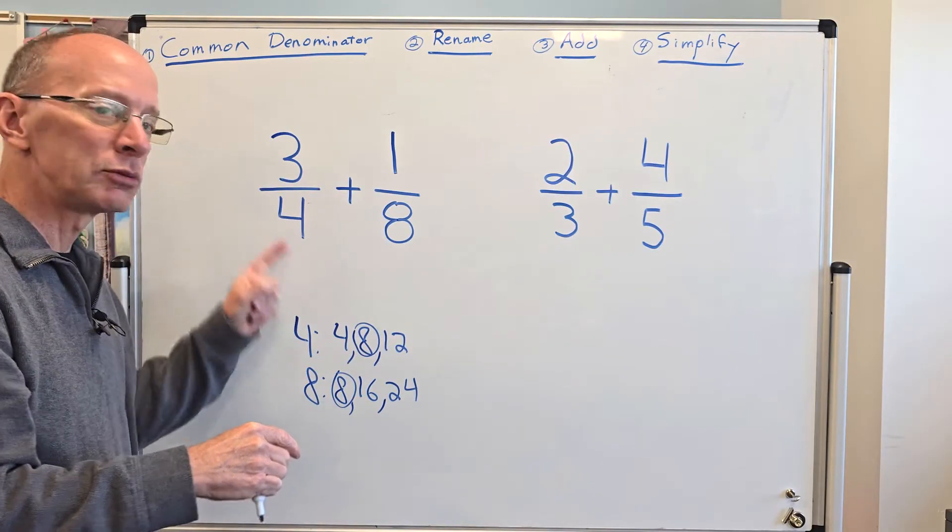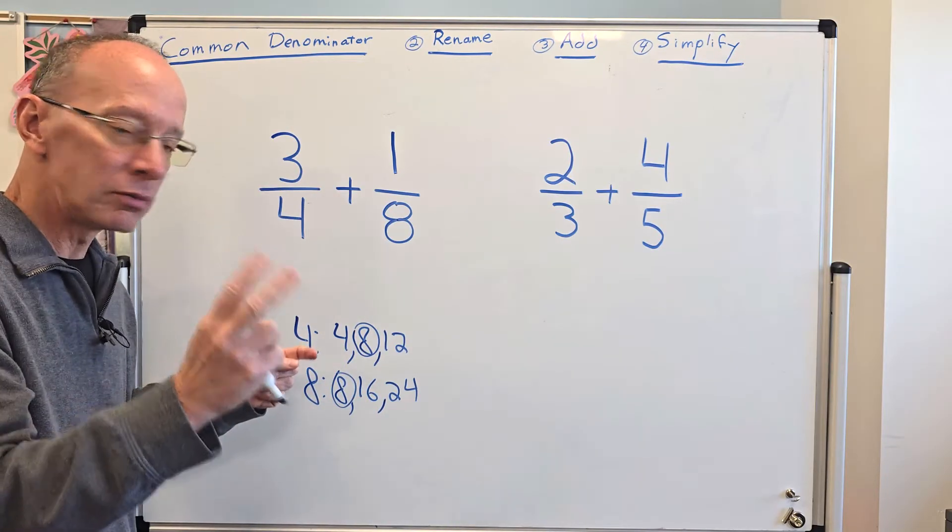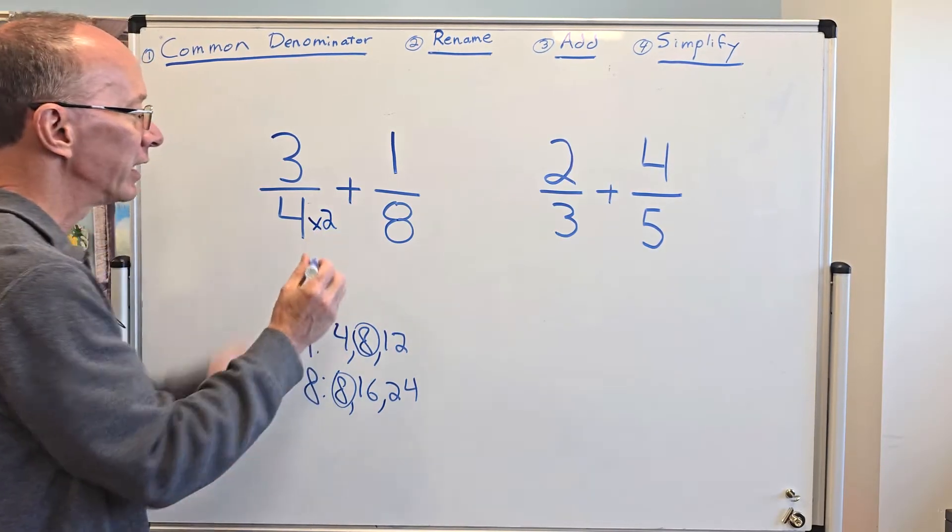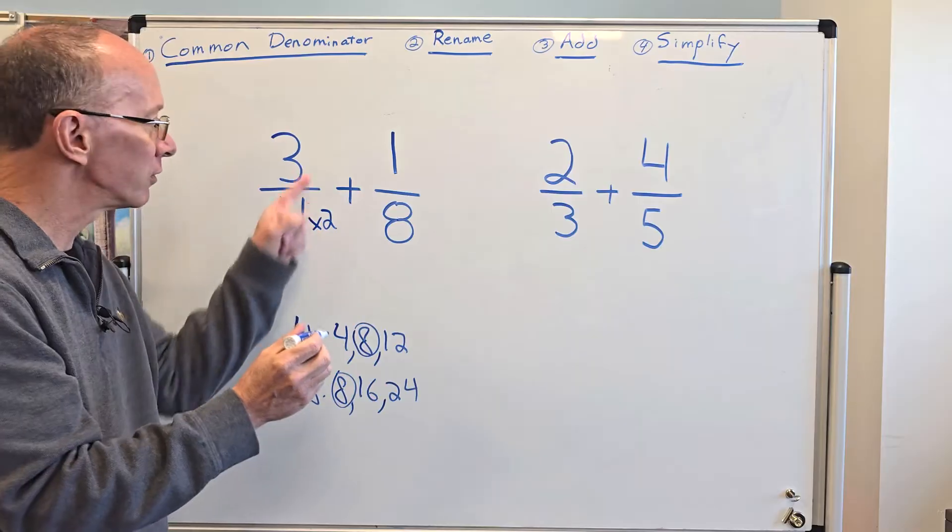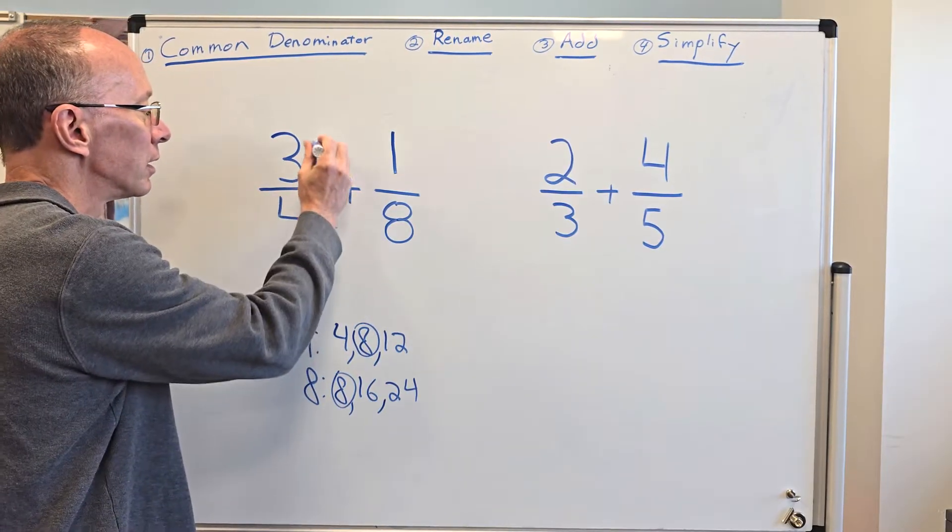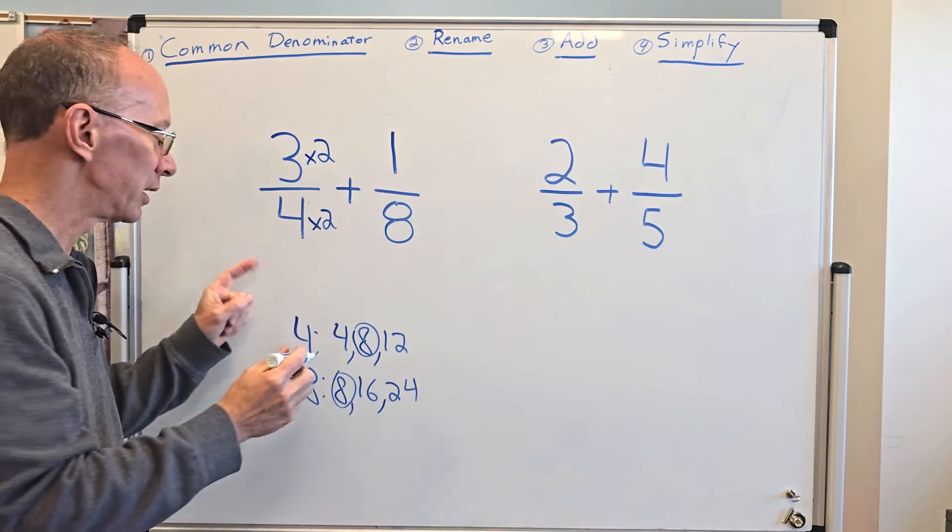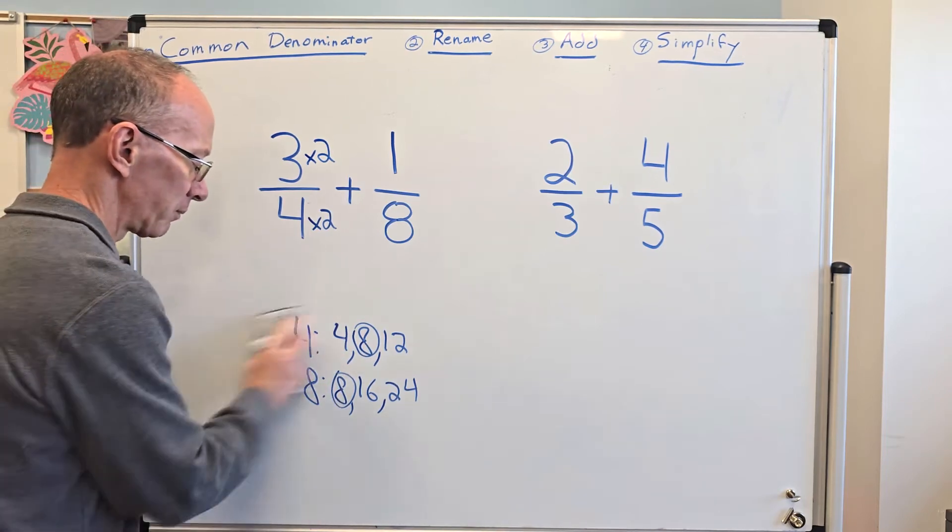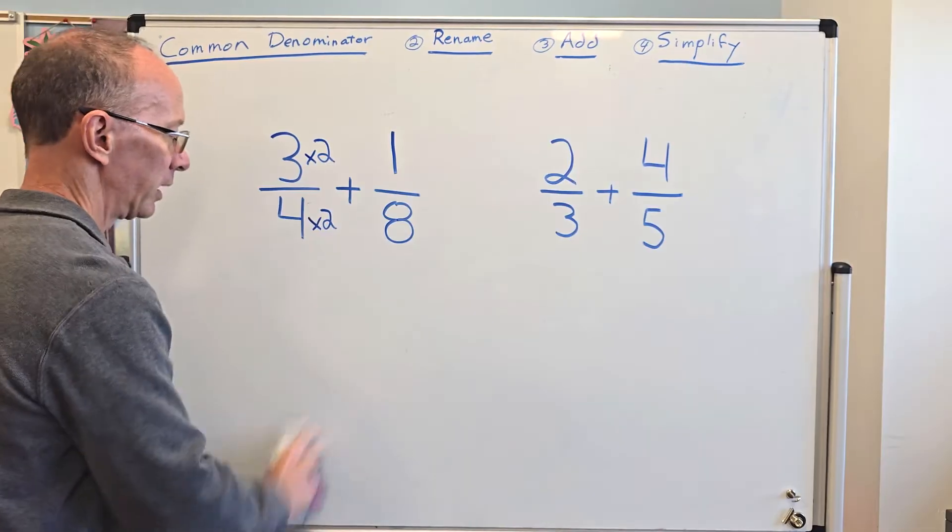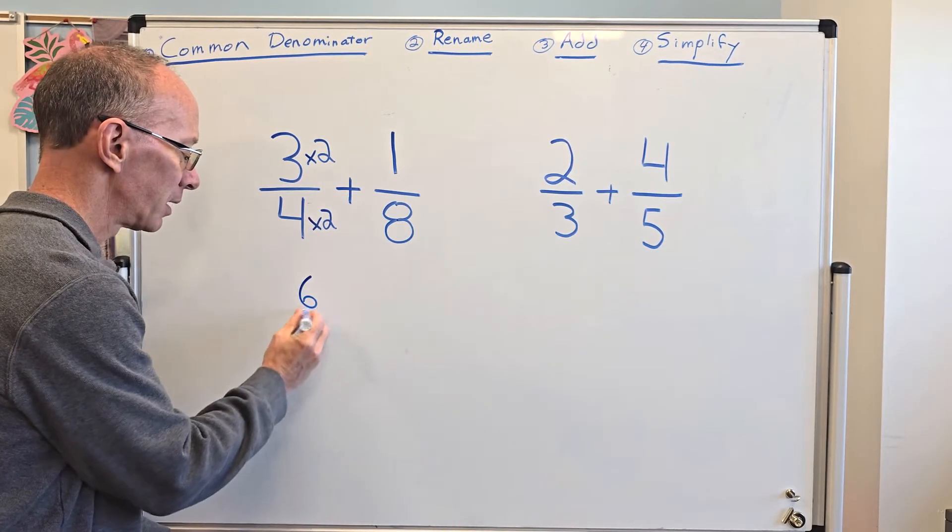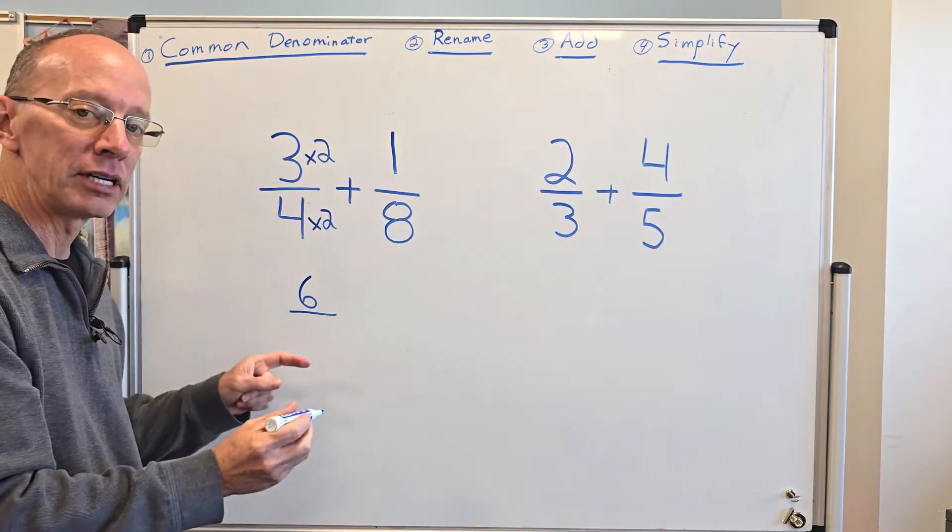So four times what equals eight? Two, four times two. So I'm going to write four times two right here. And then I need to also put times two right here. So times two. Now I'm going to rewrite this problem right here. So three times two equals six and four times two equals eight.